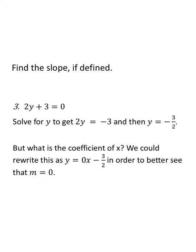For problem three, two y plus three equals zero. Solve for y: subtract three from both sides, then divide everything by two. Two y divided by two is y, and negative three divided by two is negative three halves. There's no x term, but you could rewrite it as y equals zero x minus three halves. The slope is zero — this is the equation of a horizontal line.